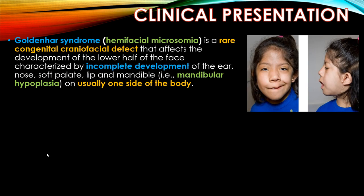Goldenhar syndrome is also called hemifacial microsomia. It is a rare congenital craniofacial defect that affects the development of the lower half of the face. It is characterized by incomplete development of the ear, nose, soft palate, lip, and mandible — that is mandibular hypoplasia, usually on one side of the body.